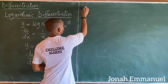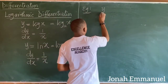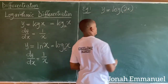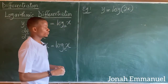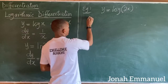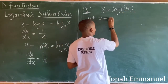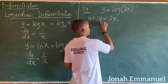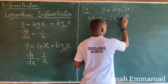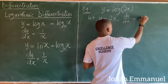Let's take an example. Say y is equal to log 2x. Differentiate this. Let u be equal to what I have in the bracket, that's 2x. Differentiating u with respect to x, du over dx is equal to 2.